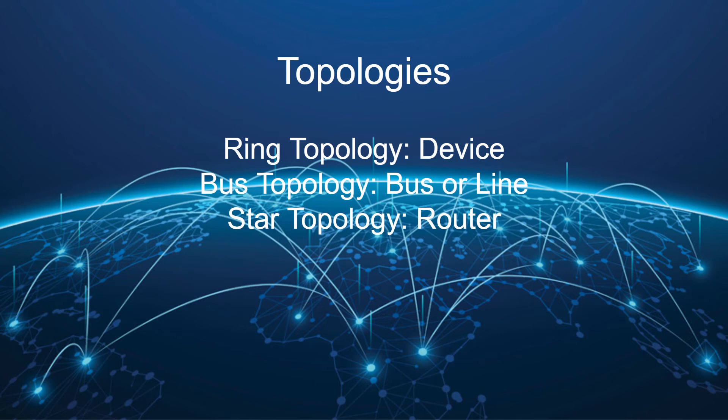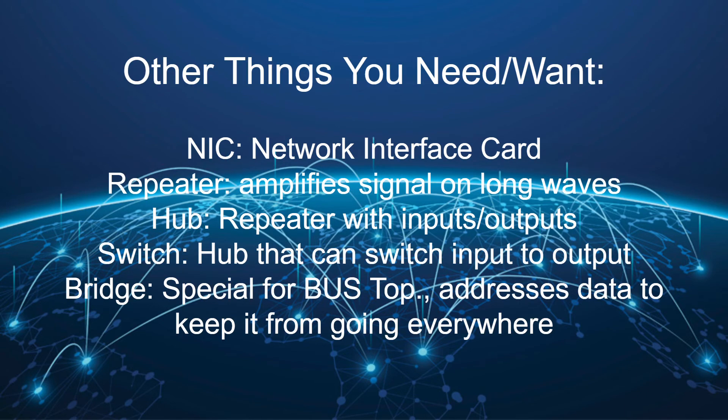By far the most popular topology is the star topology. This is where you have one device — usually a router — in the middle, and that router sends and receives all messages between all connected devices. That's what Wi-Fi networks are. I have a router at home, we have a router at school, and it's both sending and receiving messages to and from all devices. Star topology is really easy to set up: buy a good router, connect all devices to it, and they're connected to each other through the router.